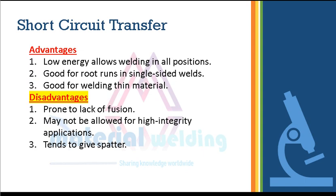Advantages of short circuit mode: low energy allows welding in all positions; it is good for root runs and single-sided welds; and it is good for welding thin material. Disadvantages: this mode is prone to lack of fusion; it may not be allowed for high integrity applications; and it tends to produce spatter. See this video and understand how the transfer happens.